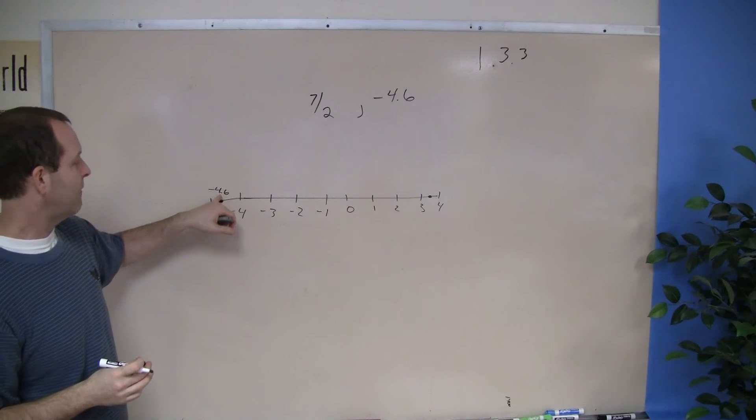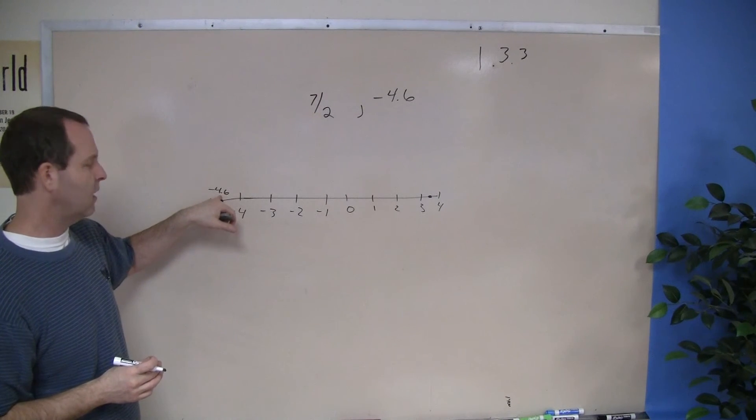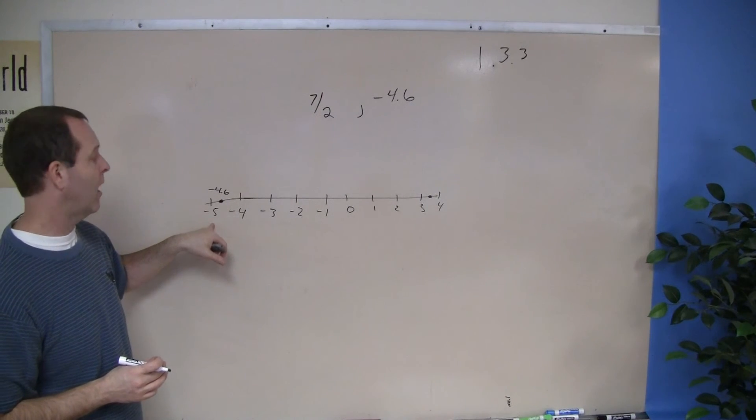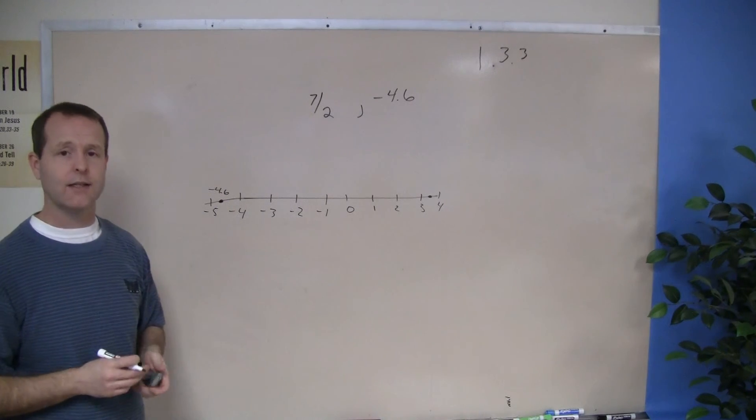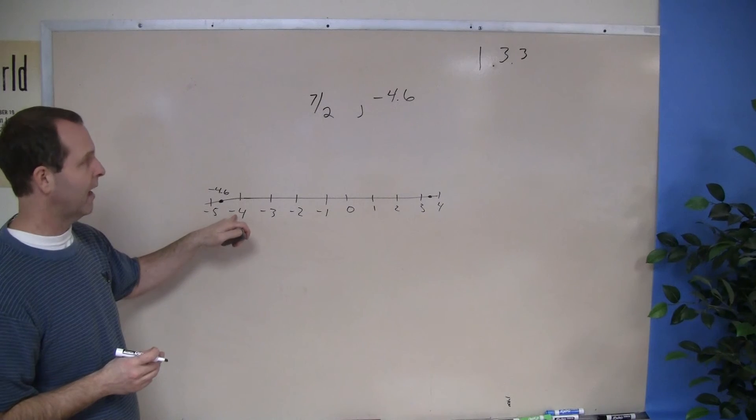And you can see that negative 4.6 is between negative 4 and negative 5, and it's going to be a little bit closer to negative 5 as well, because the point 6 is closer to 5 than it is to this starting point at negative 4.